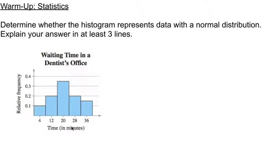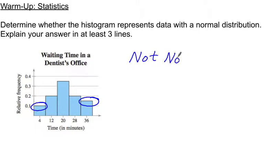For this distribution, the answer is no, this is not a normal distribution. Looking at the furthest left class and the furthest right class, those are not symmetric. At first it looks like it fits a lot of those characteristics of the normal distribution, but it does not look symmetric. So this is not normal because it is not symmetric.